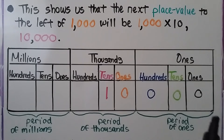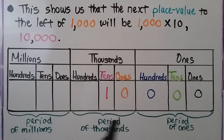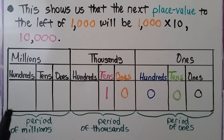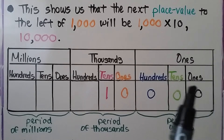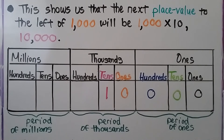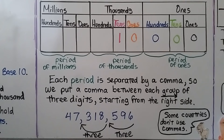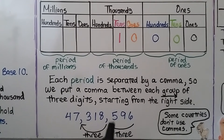We have our period of ones — this group of three — our period of thousands, that's this group of three, and our period of millions, this group of three. Remember, they each have a ones, tens, and hundreds. Each period is separated by a comma. So we put a comma between each group of three digits.